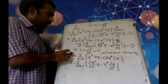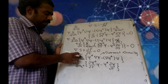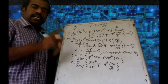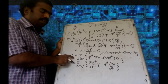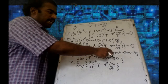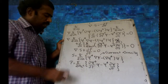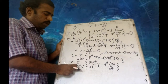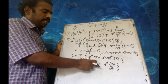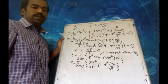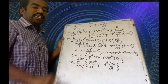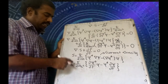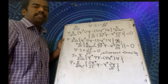So we get S = ℏ/(2im) · (psi-star del psi minus del psi-star · psi). This is the current density of the Klein-Gordon equation. For P: P = ℏ/(2imc²) · (∂psi-star/∂t · psi minus psi-star · ∂psi/∂t). This form is different from the Schrödinger equation — this is the probability density.